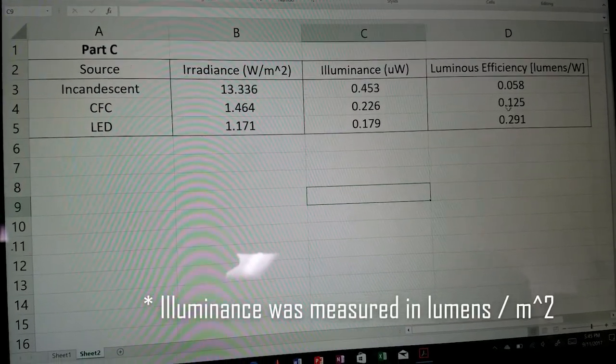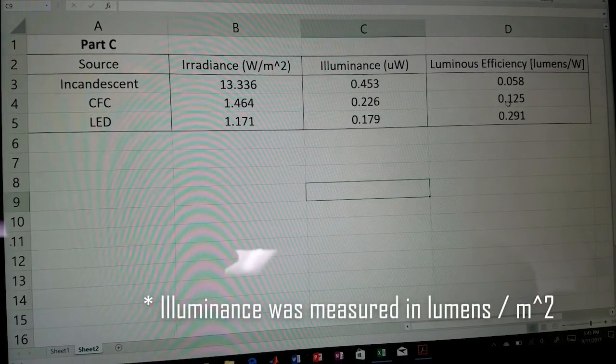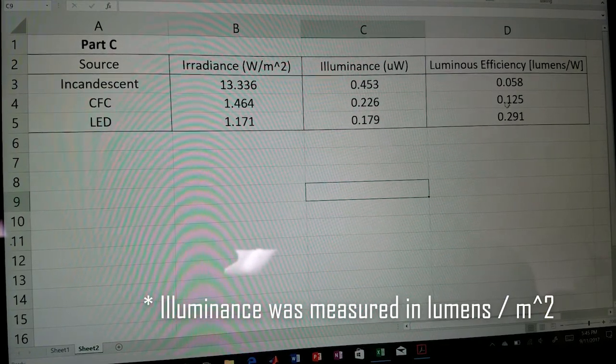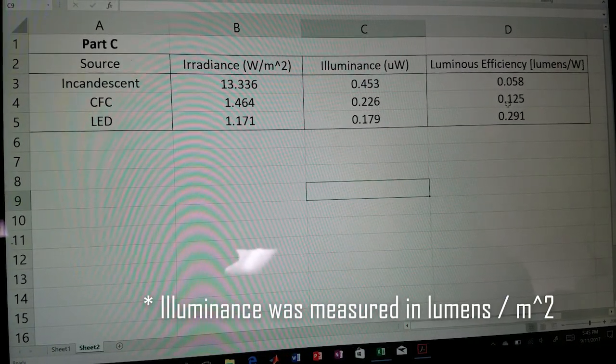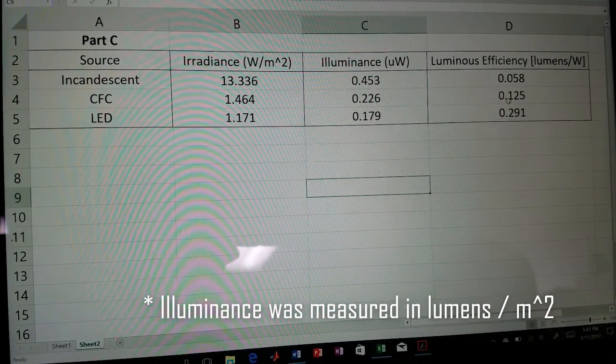So for Part C, we measured irradiance and illuminance for three different sources: the incandescent, the CFC, and the LED. And from these measurements, we were able to calculate the luminous efficiency.